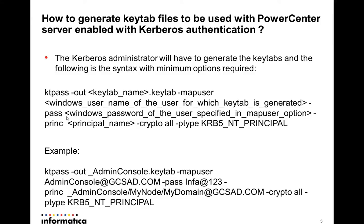The 'pass' option is the password of the Active Directory user to which we are mapping the service principal name. The 'crypto' option takes as input the cryptographic algorithm with which we want to generate the key. Currently RC4-HMAC is the only supported cryptographic algorithm with PowerCenter. But if you specify 'crypto all', it generates keys with different cryptographic algorithms and stores them in the same keytab file. We would usually recommend specifying 'all' so that keys for all supported algorithms are placed in the keytab file.